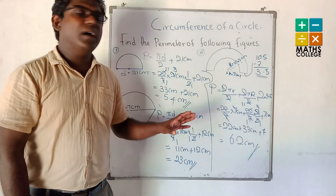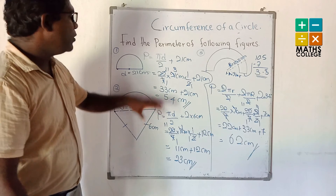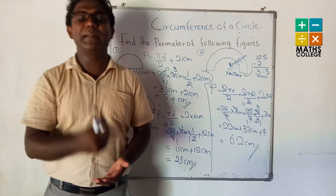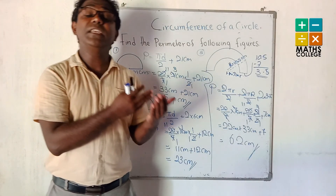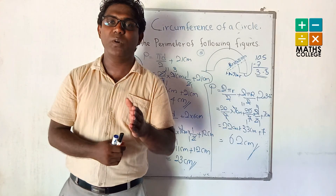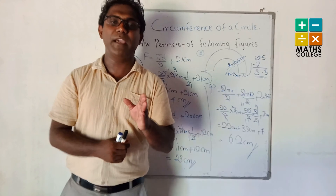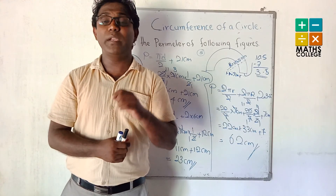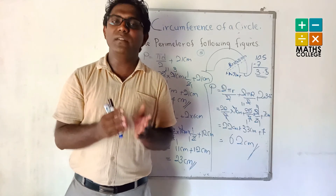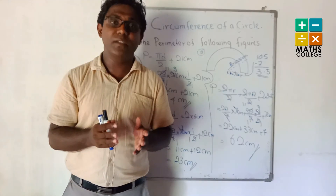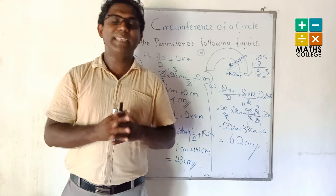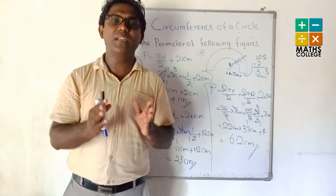Now you have learned how to solve problems using our new formula for circumference of the circle: C equals 2πR, or C equals πD. You also now know that π is a constant with value 22 upon 7. You can now do more exercises and examples using this formula. Goodbye, and have a good future.